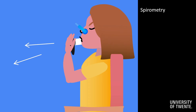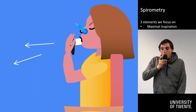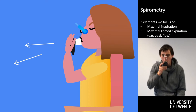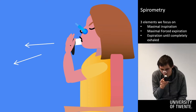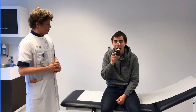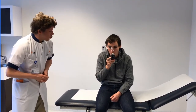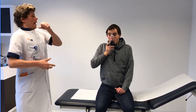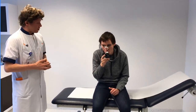Spirometry is such a test, during which, for example, a child blows into a turbine connected to a handheld device. Unfortunately, performing this test does need a specific execution. This execution starts with maximal inspiration, followed by maximal forced expiration, and is then continued into a complete exhalation. Doing this correctly, especially for children, is normally achieved with appropriate medical supervision.